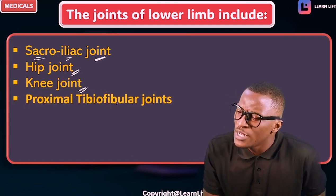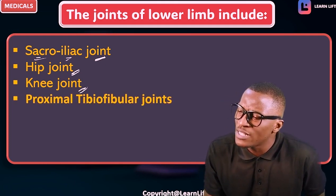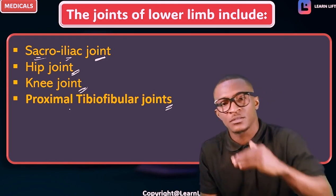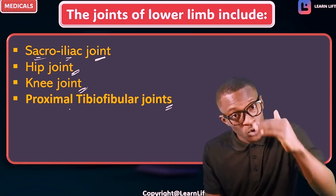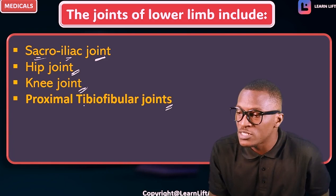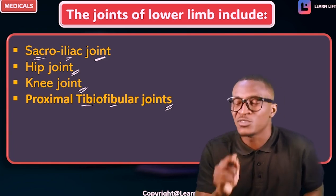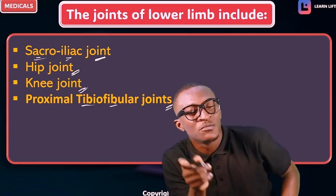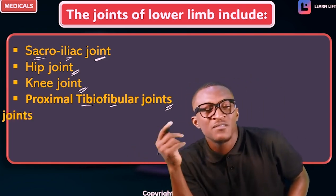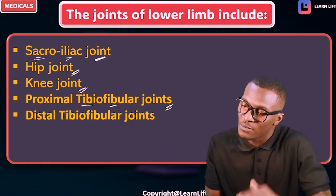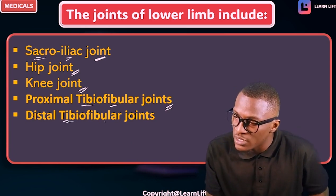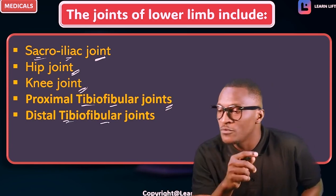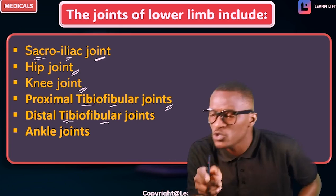The next one we call the proximal tibiofibular joint. Proximal means up, or above, or close — between the tibia and fibula. We also have the distal tibiofibular joint. Distal means down.